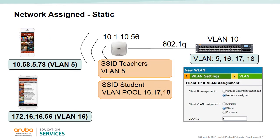If you select network assigned and static, you can statically set which VLAN users will fall into based on the SSID. The IAP is in its own subnet; the administrator configures the SSID with a specific VLAN. In this example, the IAP is in VLAN 10, users associating to the teacher SSID fall into VLAN 5, and users on the student SSID are randomly assigned a VLAN from a pool of 16, 17, or 18. For this to work, you must configure the IAP switch with trunk protocol 802.1q and set up the same VLANs.